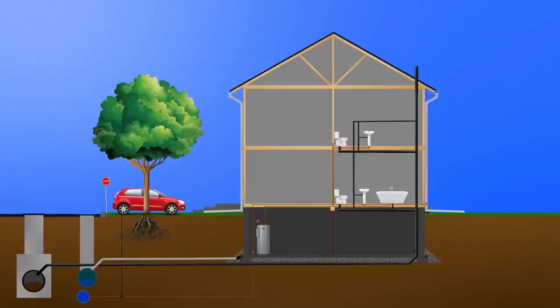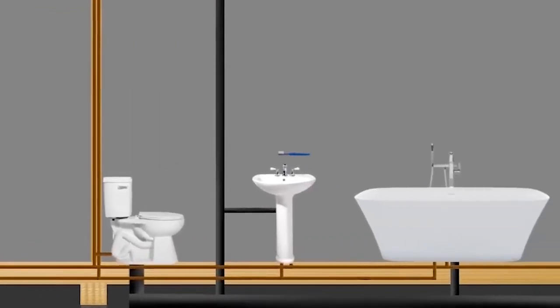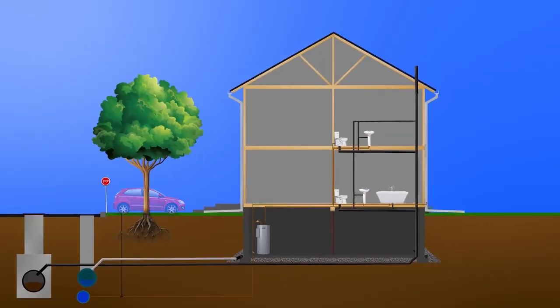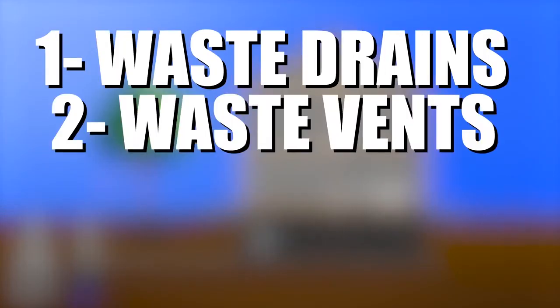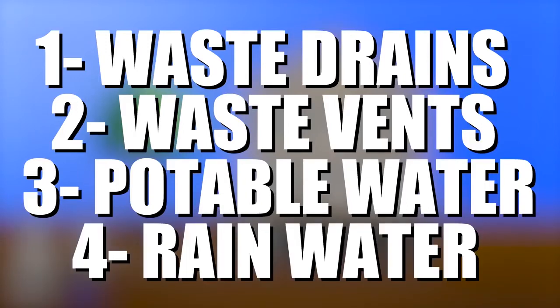I want to cover how the plumbing works in a typical home. Everything we do pretty much relies on plumbing when you think of it for a second. Whether it's washing your car or brushing your teeth before going to bed, you're using your home's plumbing system. A home's plumbing system is composed of four things. Waste drains, waste vents, potable water, and rainwater management.